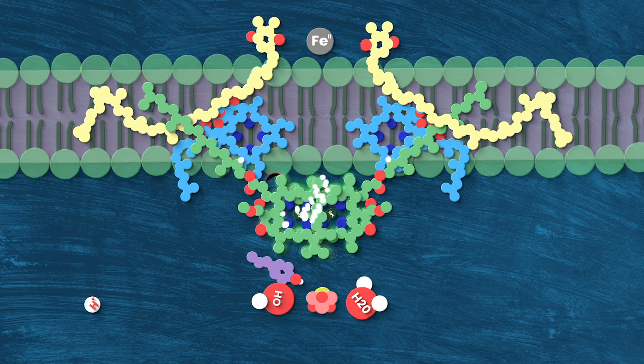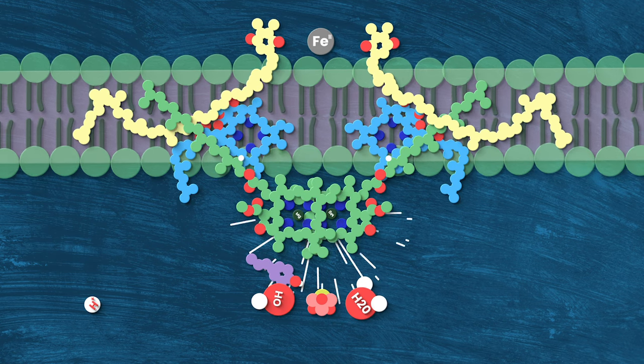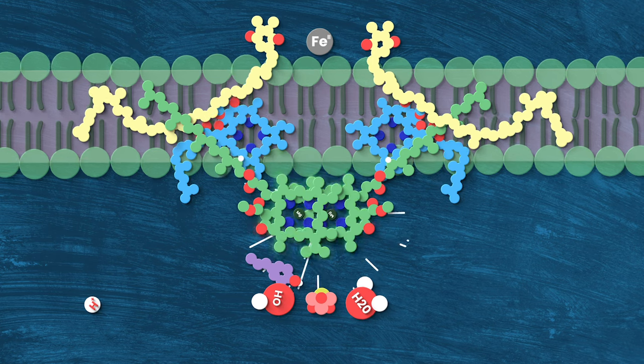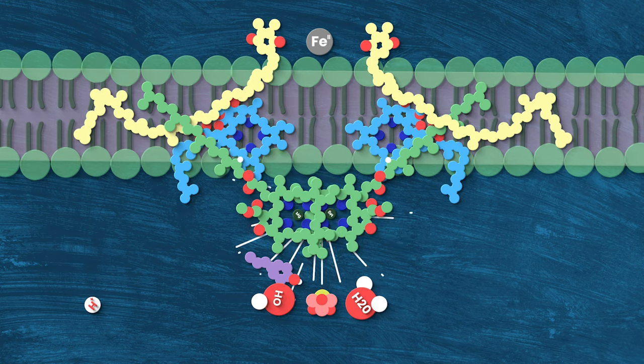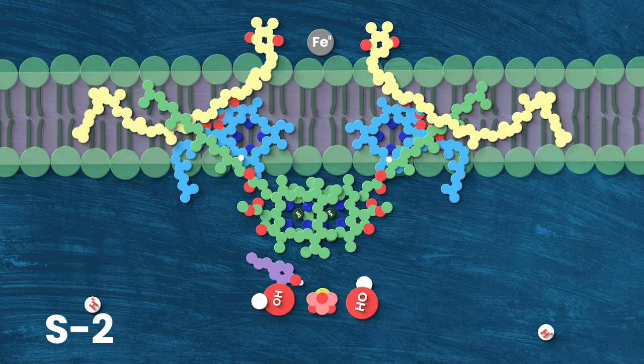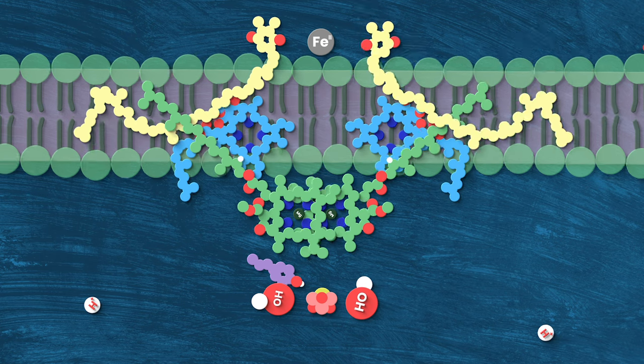But then, another photon hits, and the cycle repeats. P680 pumps an excited electron up into the top right of the reaction center, which we'll get to in a second. P680 becomes P680+, and goes all super saiyan on another water molecule, sucking up one electron and sending a proton down into the lumen. Things are a little less stable but still doable.